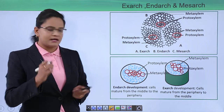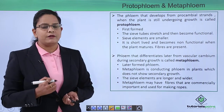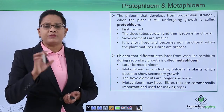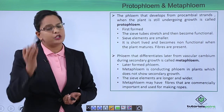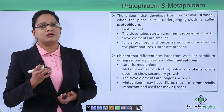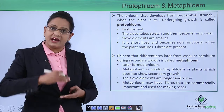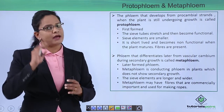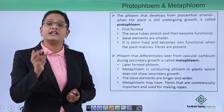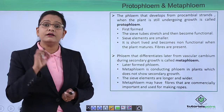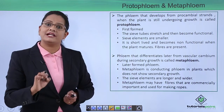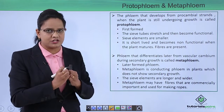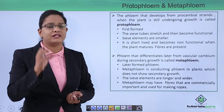Proto phloem and meta phloem also develop from pro cambium strands. Proto phloem is the newly-formed phloem. Differences between them are seen in their cells — in proto phloem, sieve tubes are still stretching and becoming functional, and sieve elements are smaller in size. Proto phloem gets crushed as the plant grows and becomes non-functional when the plant matures. Phloem fibers are present in proto phloem.